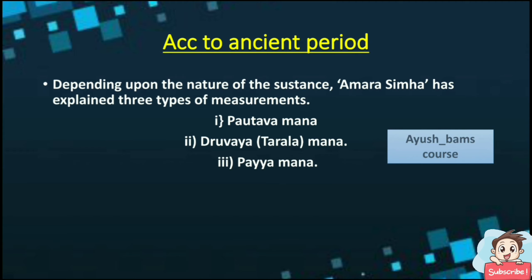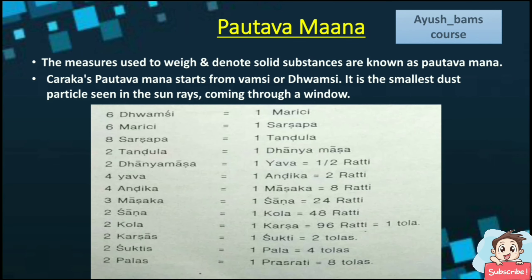According to the ancient period, depending upon the nature of the substance, Amarasimha has explained three types of measurements. Pautava Mana: the measures used to weigh and denote solid substances are known as Pautava Mana. Charaka's Pautava Mana starts from Vamsi or Dhvamsi, which is the smallest dust particle seen in the sun rays coming through a window. 6 Dhvamsi equals 1 Marichi. 6 Marichi equals 1 Sarsapa. 8 Sarsapa equals 1 Tandula.